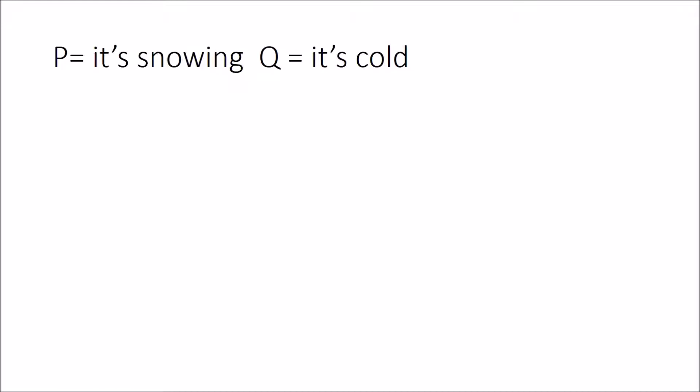The first symbol we're going to introduce looks like a V. What does the V mean? It means OR. So it means P or Q or both. In everyday English, it means it's snowing or it's cold.